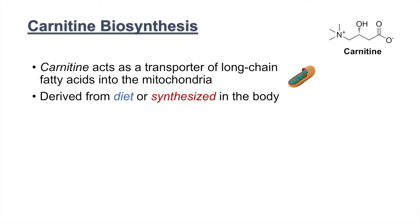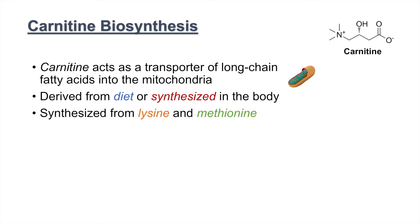Carnitine is derived from our diet or it's synthesized in our body — that's the focus of this lesson. Carnitine is synthesized from the amino acids lysine and methionine. The synthesis takes place in a variety of organs, but the kidney seems to have the highest activity of carnitine biosynthesis.